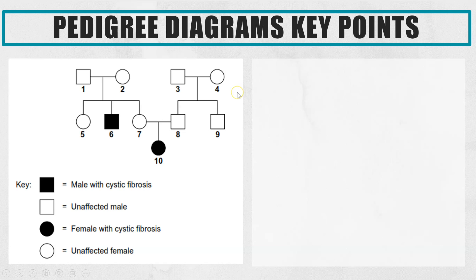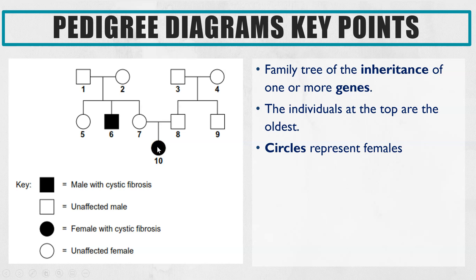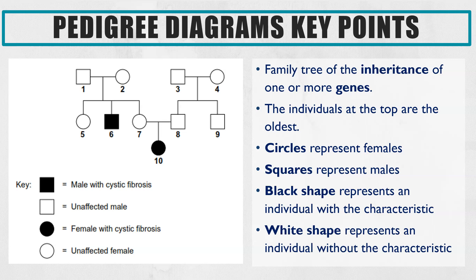First of all, just to go through what we mean by pedigree diagram and what the key points are. This here is a pedigree diagram — it looks like a family tree and it is actually a family tree of the inheritance of one or more genes. The individuals at the top are the oldest, so individuals one and two would be the parents of five, six and seven, and the grandparents of number ten. Anytime you see a circle, that represents a female. The squares represent males. The black shapes are individuals who have the condition of interest and the white shapes are individuals who do not have the characteristic. You will always get a key to give you the exact information, but these always stay the same.